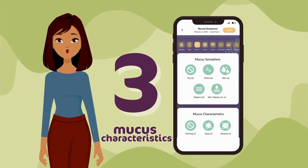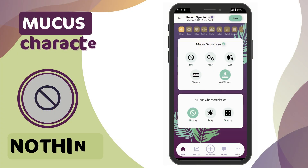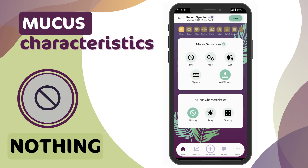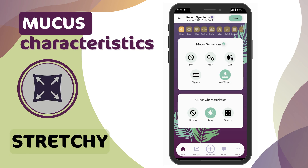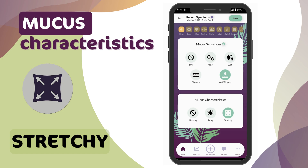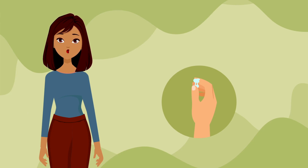There are three possible mucus characteristics you can choose from. Nothing: if no mucus was seen on the toilet paper in the bathroom, record none for no characteristics. Tacky: check your toilet paper for any kind of tacky mucus throughout the day — this includes all thick, clumpy, pasty, yellowish, or opaque mucus. Stretchy: if repeatedly stretchy characteristics are seen when wiping or mucus is stretch-tested between the fingers, chart stretchy. Remember to observe your mucus periodically throughout the day, but only record your most fertile observation of the day on your chart.